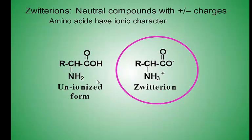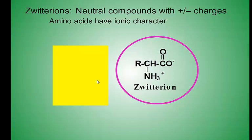An amino acid can exist as a zwitterion. Zwitterions are neutral compounds with both positive and negative charges, which make them neutral, so amino acids have an ionic character. The unionized form of an amino acid is somewhat fictional; the ionized form is a more realistic representation. Therefore, from this point, we will not consider the unionized form.